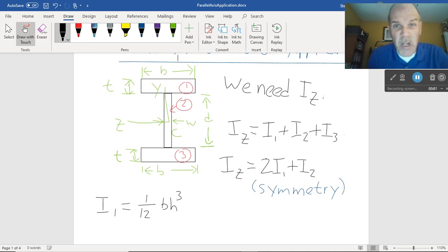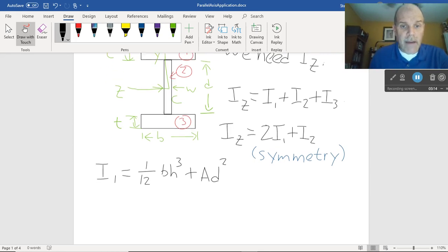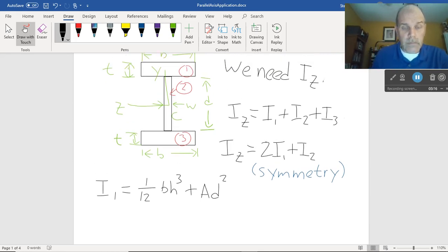The moment of inertia, 1/12 bh³. We'll put in our actual variables in a minute. But that's the formula we know for a rectangle. Well, that's the moment of inertia about its own centroid, plus area times distance between the axes squared. So, it looks like in this case, I've got 1/12 bt³, plus area is bt. And I'm looking at number 3 right now because it's the same as number 1 anyway. But now, what's that distance?